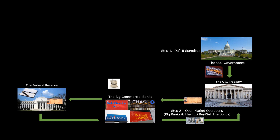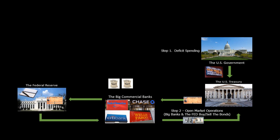It's this process of buying and selling bonds — open market operations. When you hear people talking about printing money, this is the process they're talking about. The Treasury bonds are sold to the banks, the banks sell those Treasury bonds to the Federal Reserve for a profit, the Federal Reserve writes a check from nothing and gives that check to the commercial banks, which they are able to turn directly into currency.